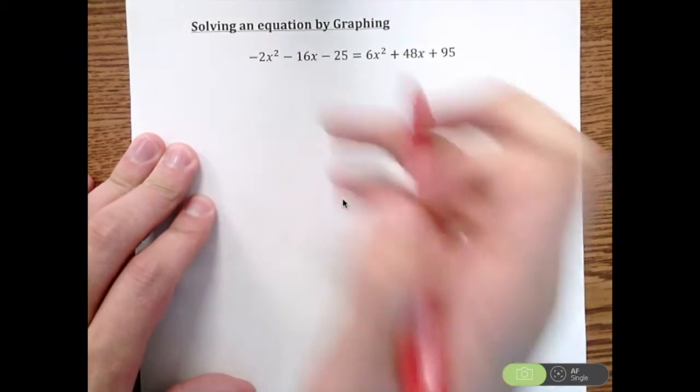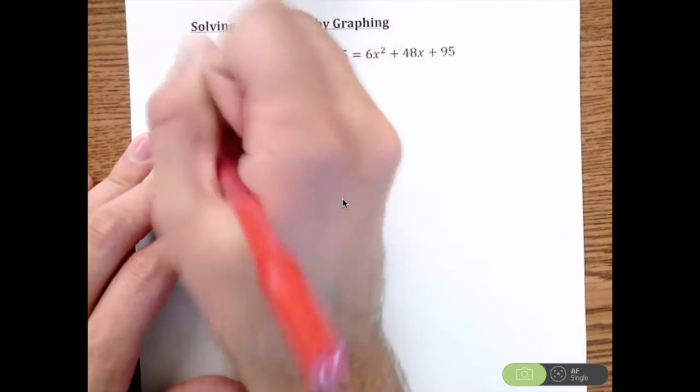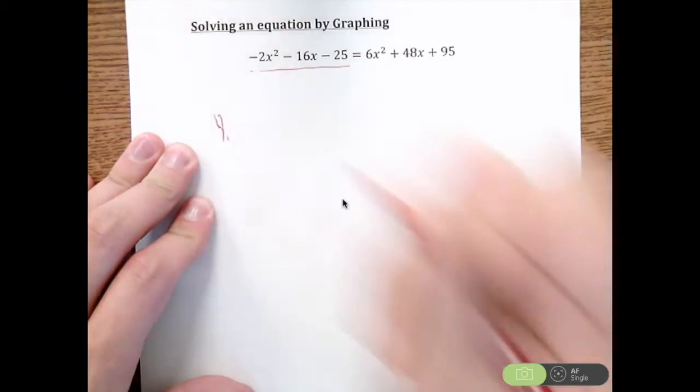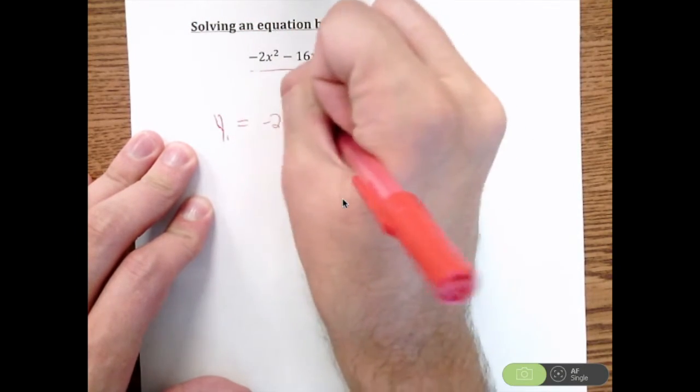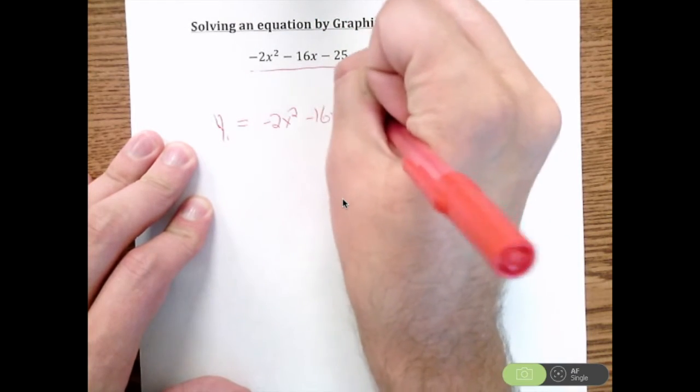On the left side of the equal sign, so this entire piece, I'm going to make that my y1 in my calculator. So y1 is going to be negative 2x squared minus 16x minus 25.